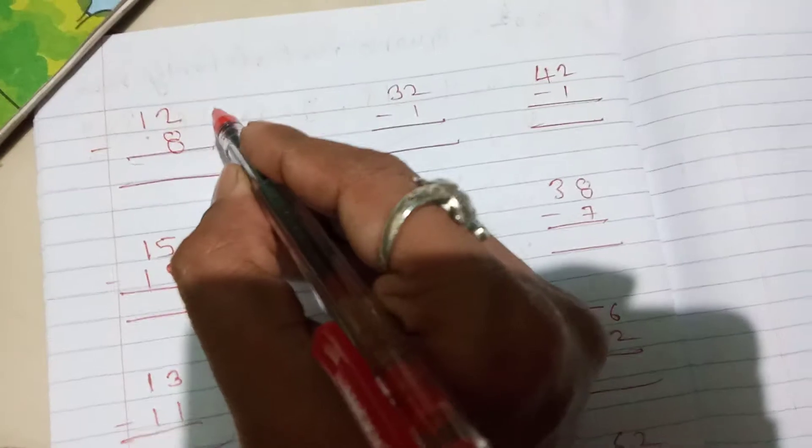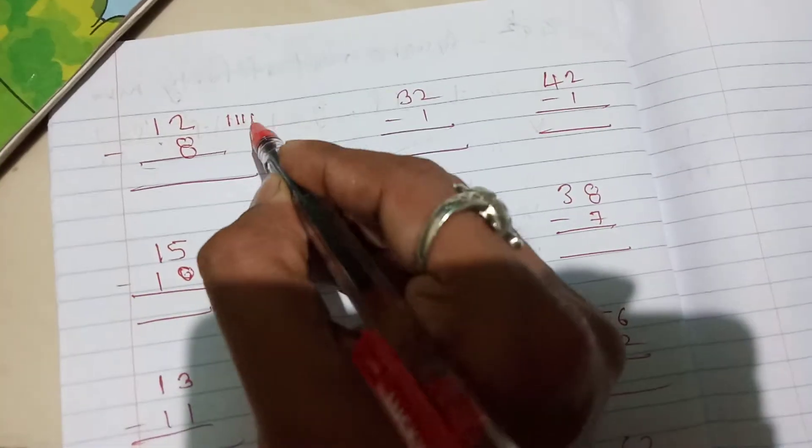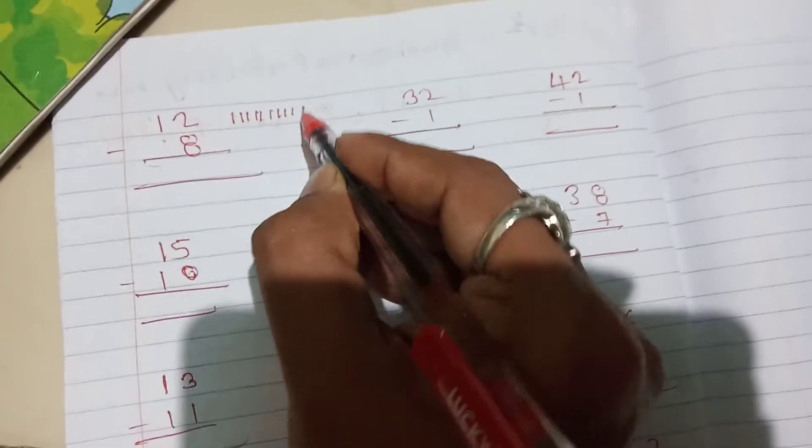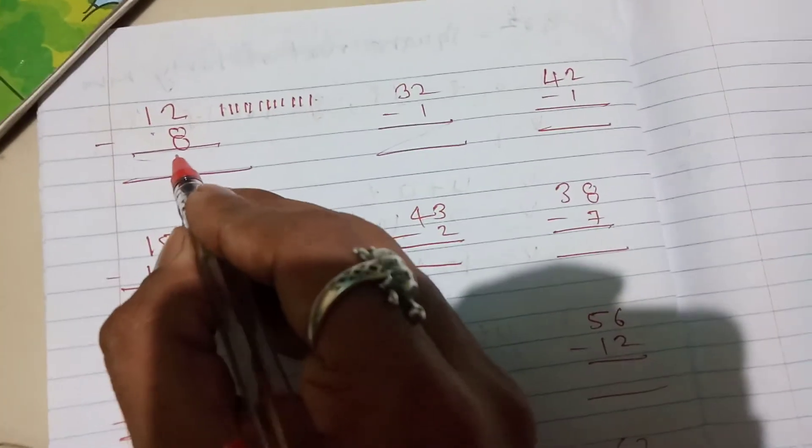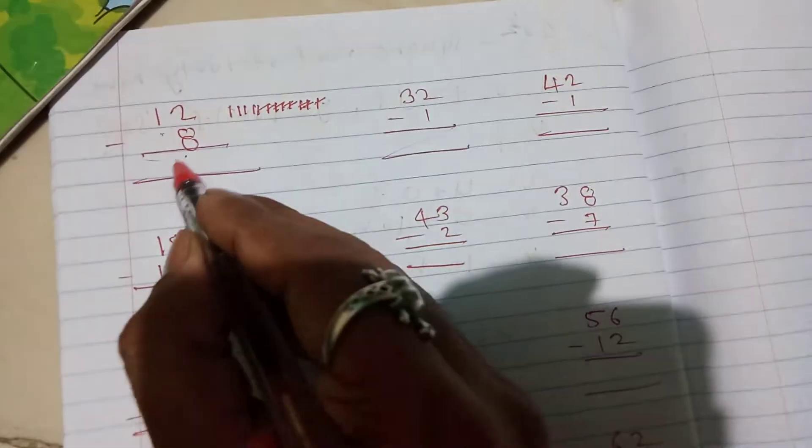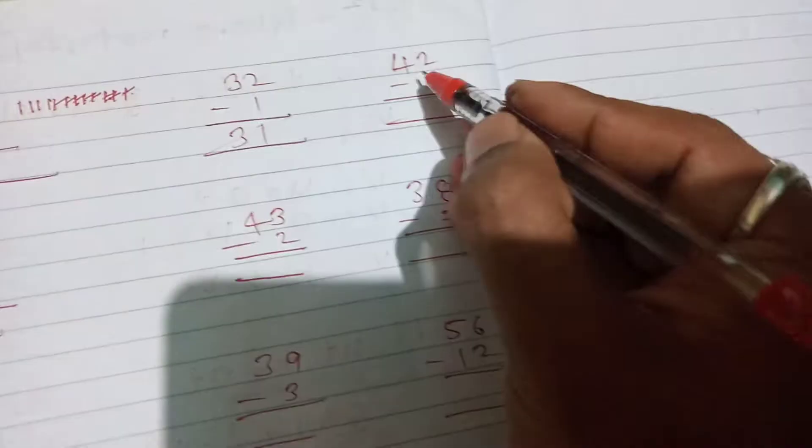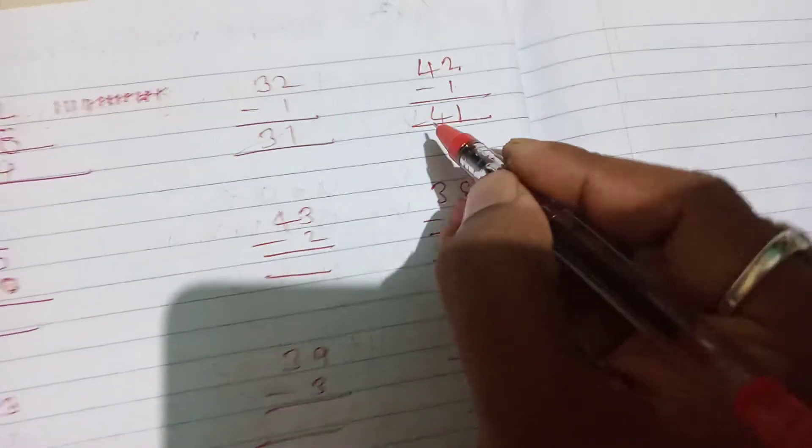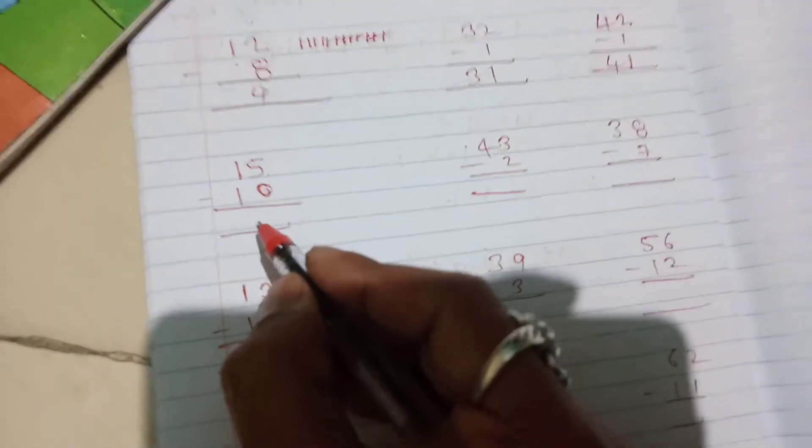12 minus 8. Let me count: 1, 2, 3, 4, 5, 6, 7, 8, 9, 10, 11, 12. So 12 minus 8, how much is it? 4. Next, 32 minus 1 is 31. 2 minus 1 is 1. 4 becomes 0. 5 minus 0 is 5.